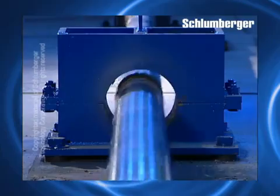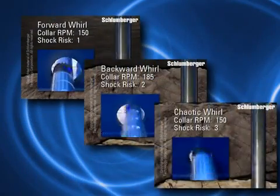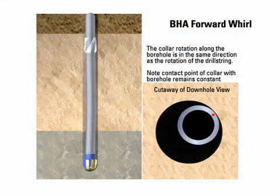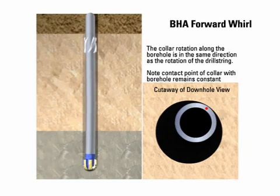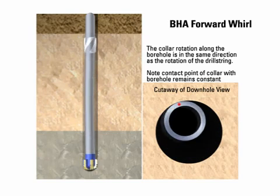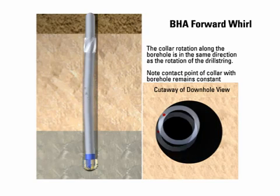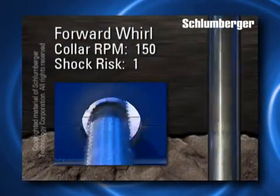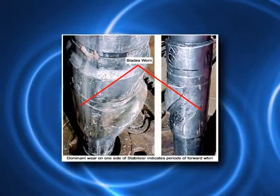There are three main types of BHA Whirl: Forward, Backward, and Chaotic Whirl. Forward Whirl is when the BHA rubs the formation along the same part of the collar as the drill string rotates. If the formation is abrasive, excessive wear will occur along the part of the collar that rubs the formation. This wear is seen as flat spots on one side of the collar, or as a single worn blade of a stabilizer. In Forward Whirl, the BHA still rotates in the same direction as the drill string. Forward Whirl can destroy bits and BHAs.